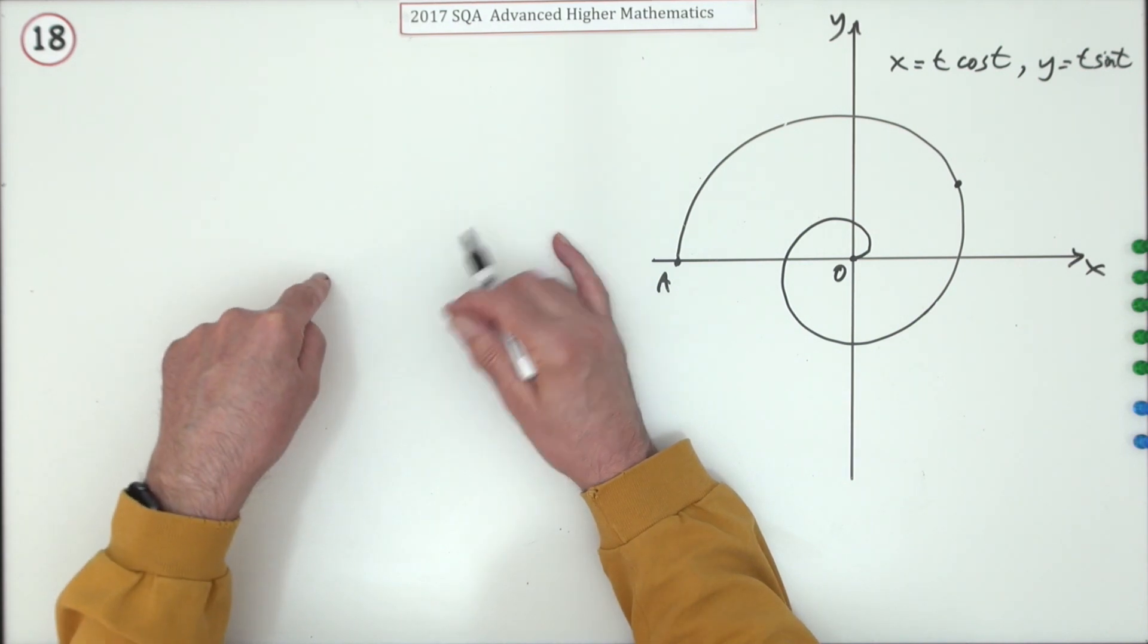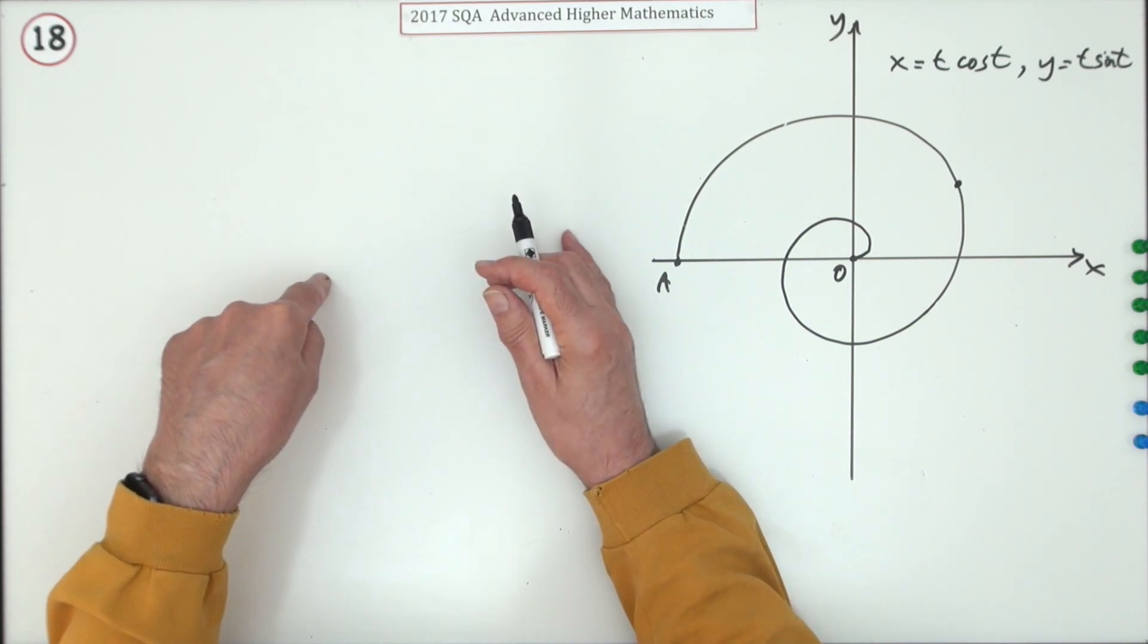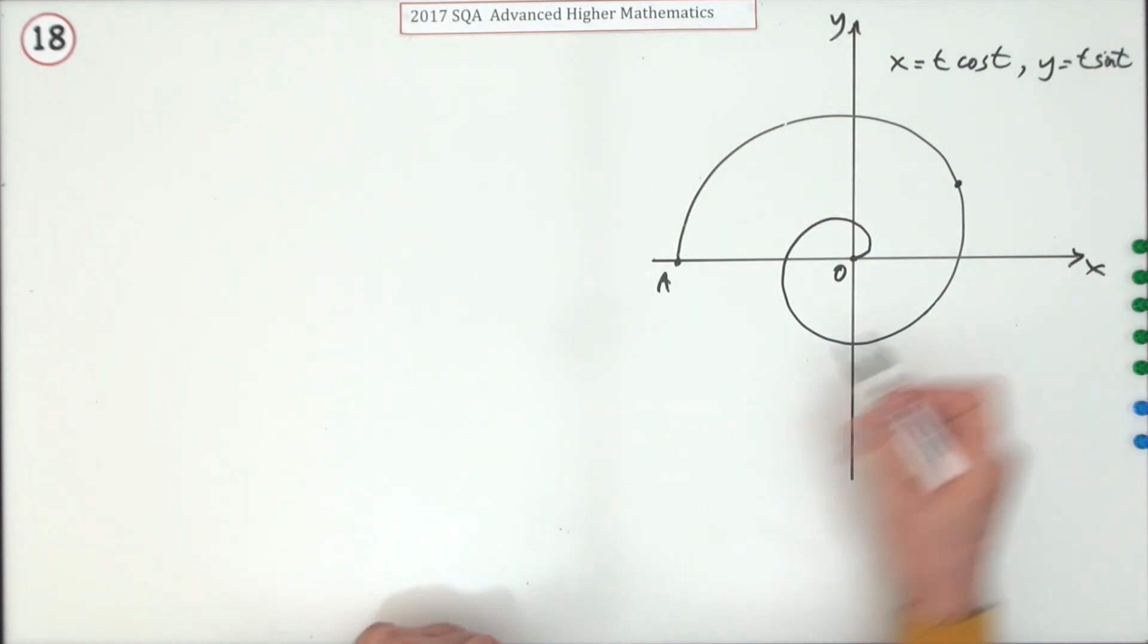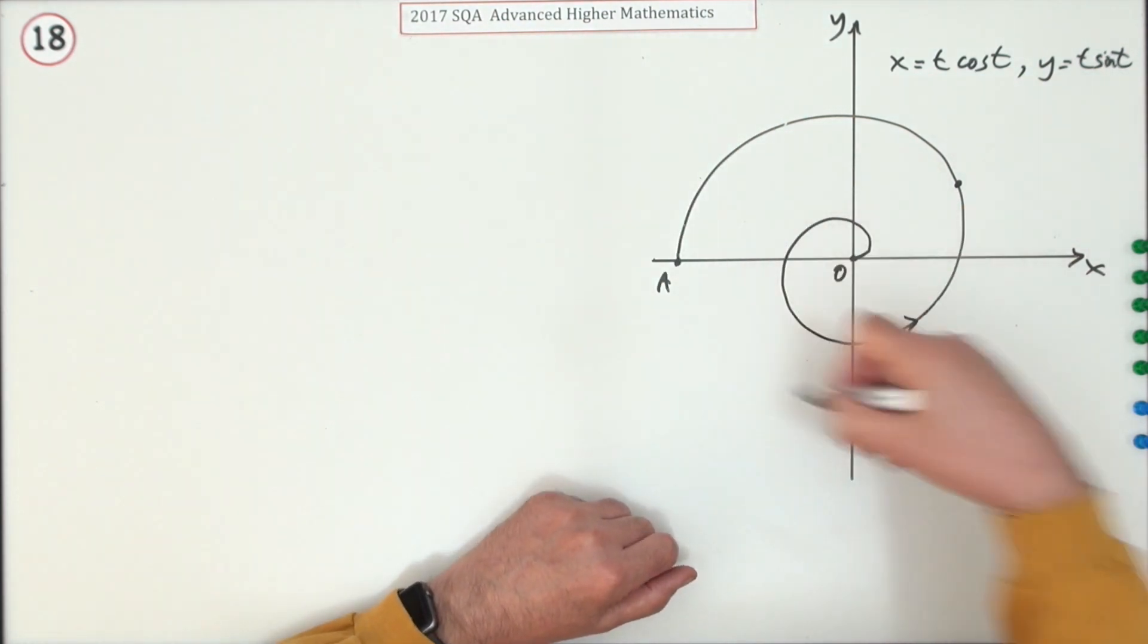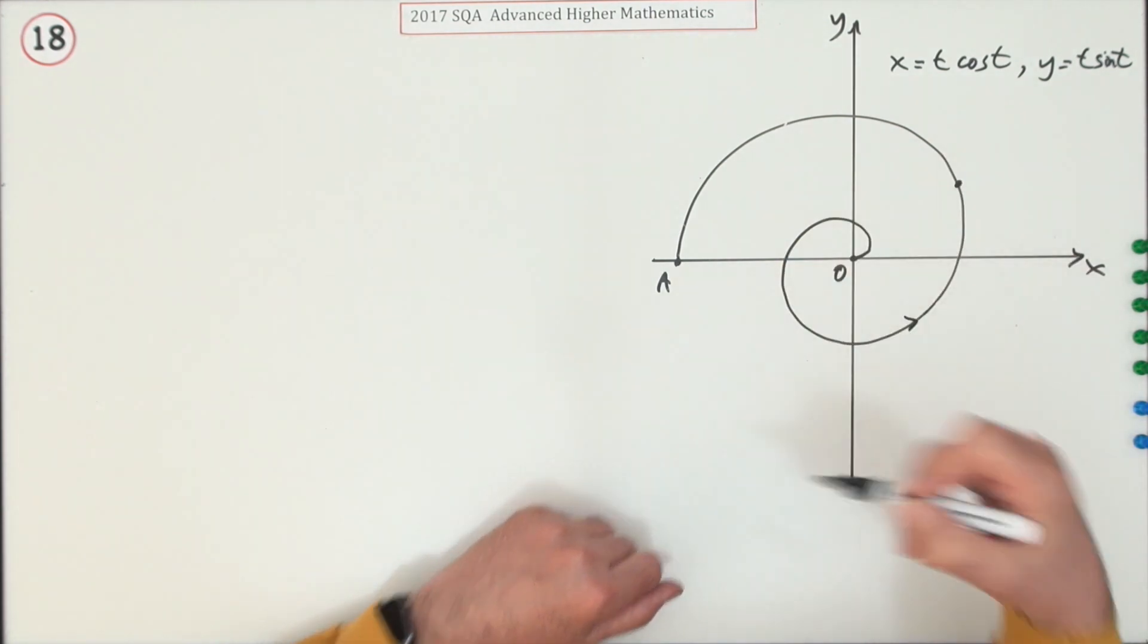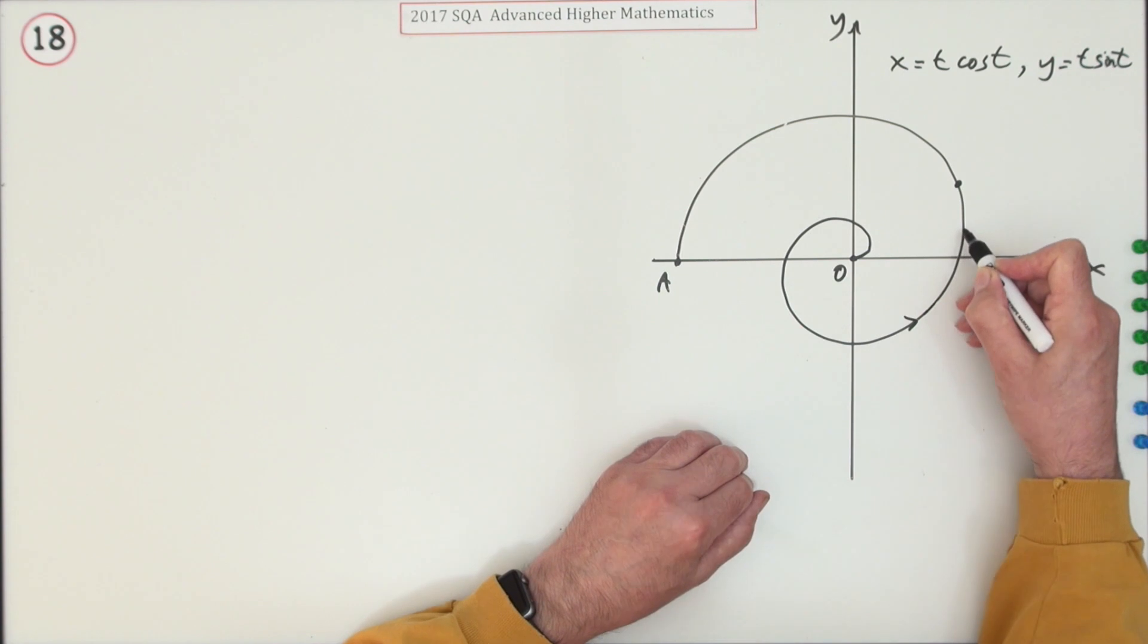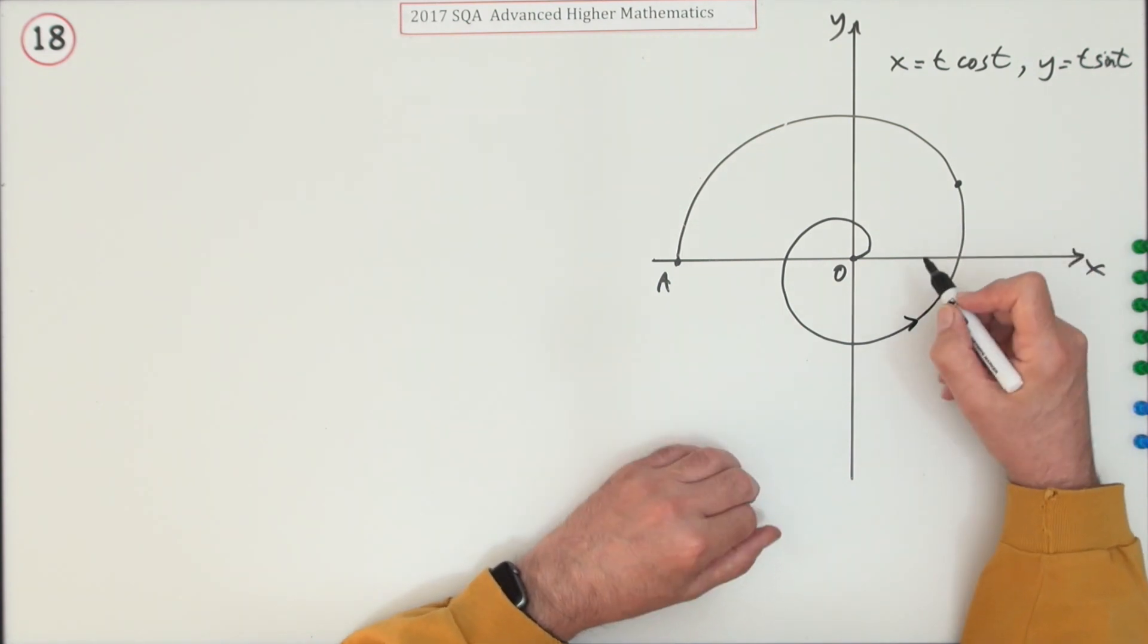The only difference in the Advanced Higher was you moved into two dimensions. That's what happens here. As this particle travels along that spiral, it has a speed which is in the direction along the path, but it's made of two components.